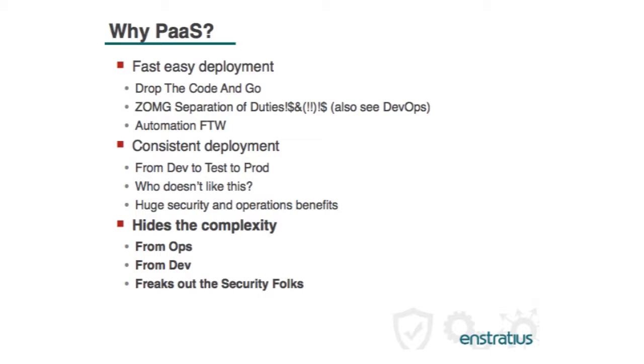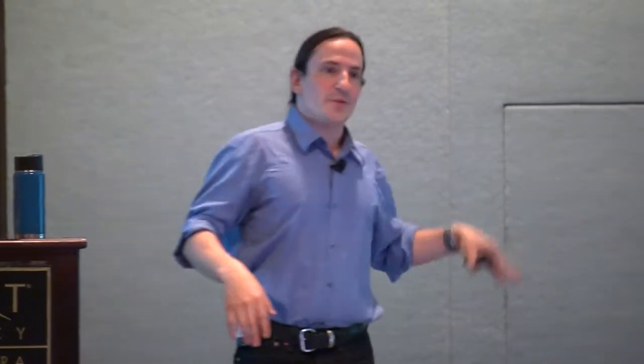PaaS is great because it hides the complexity of what's going on in the background. From a dev perspective, you can concentrate on your code. From an ops perspective, you don't have to worry about the complexity. Security people hate complexity because it makes it harder to understand what's going on, and it freaks you out when you don't understand. This is a constant theme with security people: we're like, oh my God, it's the end of the world — but it's not the end of the world, it's just different. We like saying no a lot, but just because something is different doesn't mean it's bad.